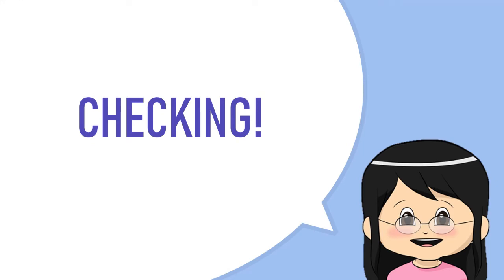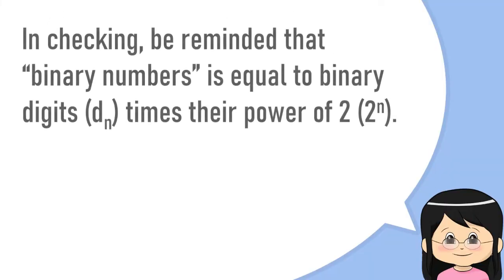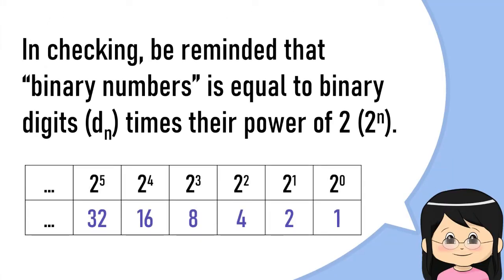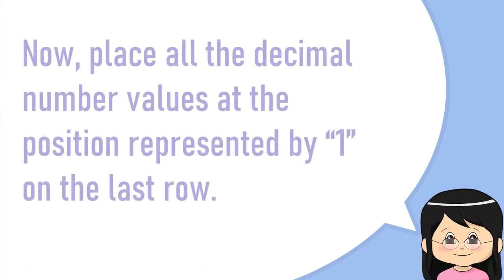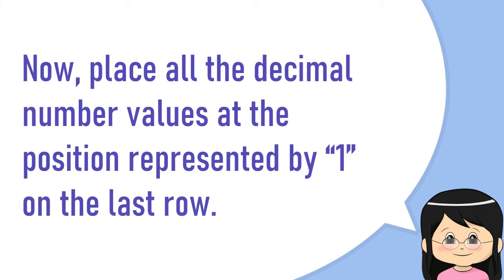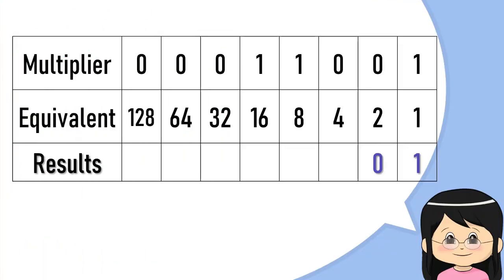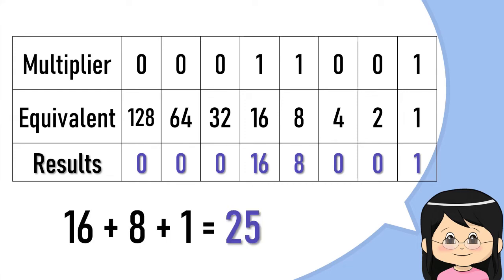Now we are going to check if the equivalent is correct. Remember that binary numbers are based on each binary digit times the power of two. To make it simple, refer to the table. Place all the decimal number values at the positions represented by one on the last row, then add all the results: 16 plus 8 plus 1 is equal to 25.